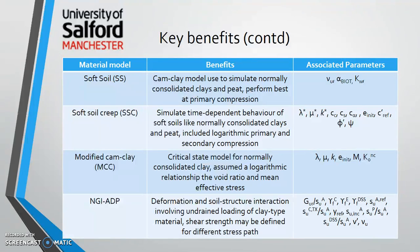Continuing with material models, the soft soil model is used to simulate normally consolidated clay and peat, and it primarily investigates primary compression. The soft soil creep model looks at both primary and secondary compression. The modified Cam Clay model looks at the critical state of normally consolidated clay, assuming a logarithmic relationship between void ratio and effective stress. The last model covers soil deformation and soil interaction. Other models are available for rock mechanics — please refer to the reference manual for those.